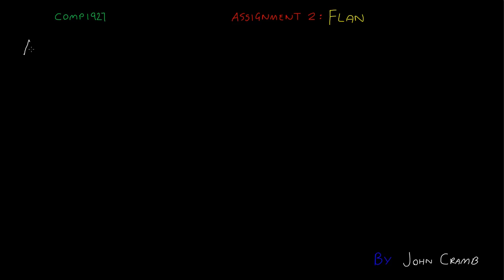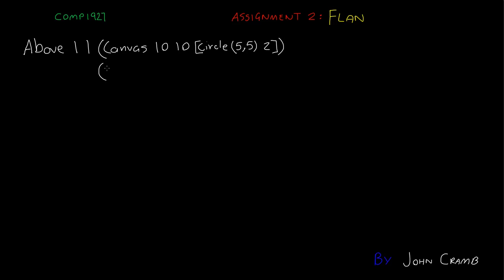To begin with I'm just going to write a very basic FLAN program. We're going to have above 1 1, and in here we're going to have a canvas which is 10 10. We'll then have our list where we'll have a circle with a center point in the center of our canvas and a radius of 2. Our second picture for the above call is going to be canvas 10 10 and here we'll include a line from 0 0 going across the whole breadth.